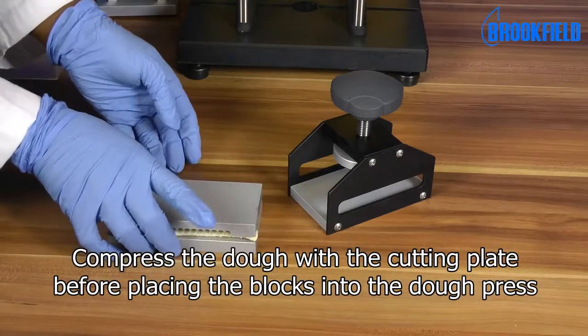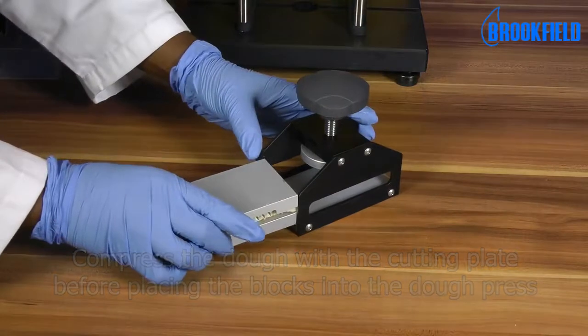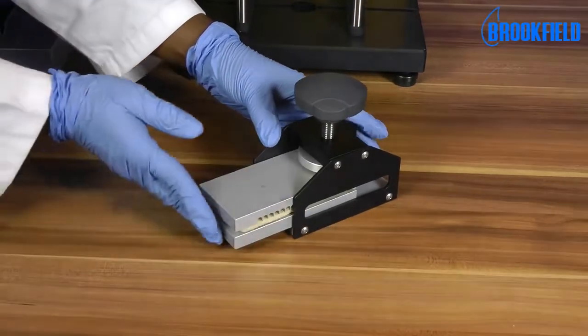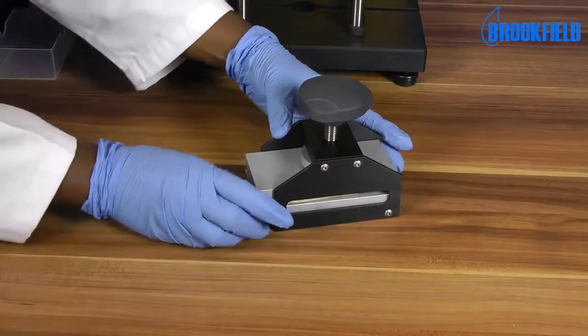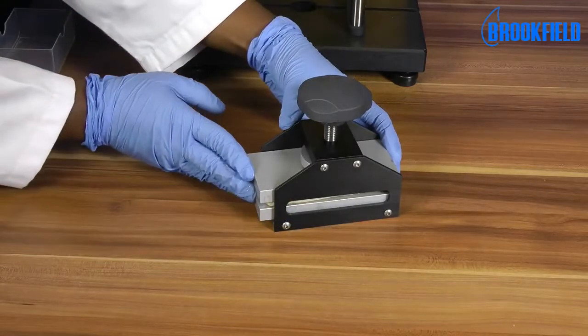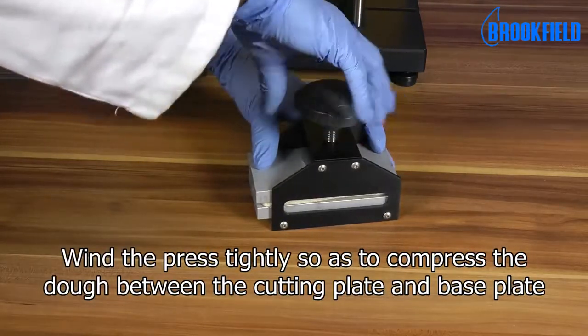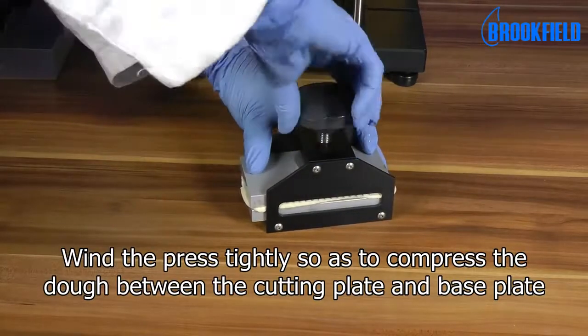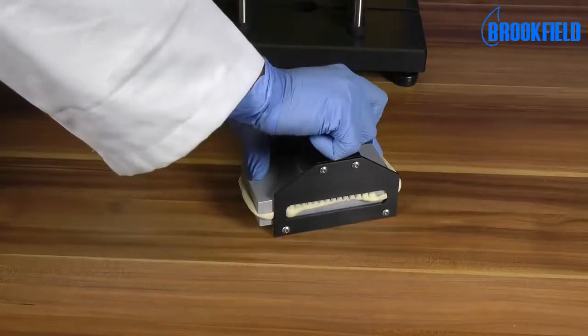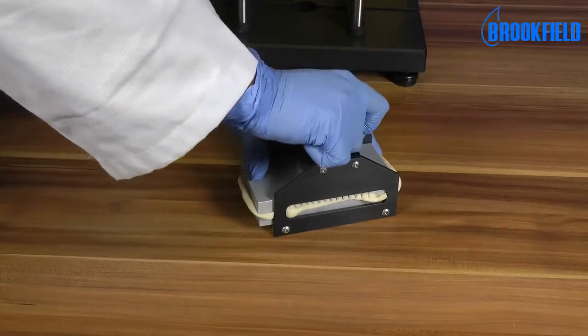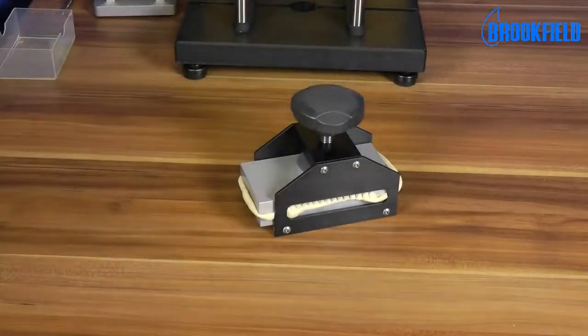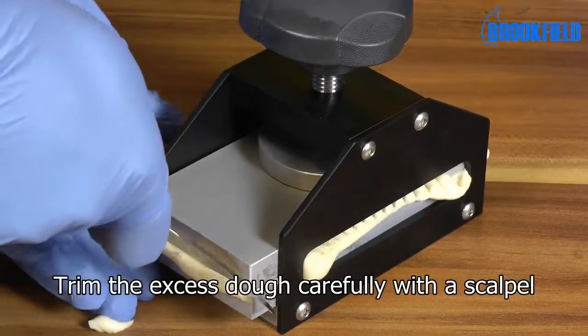Compress the dough with the cutting plate before placing the blocks into the dough press. Wind the press tightly so as to compress the dough between the cutting plate and base plate. Trim the excess dough carefully with the scalpel.